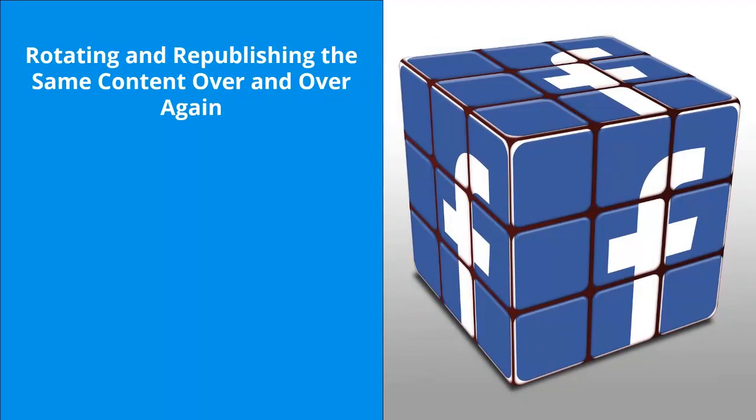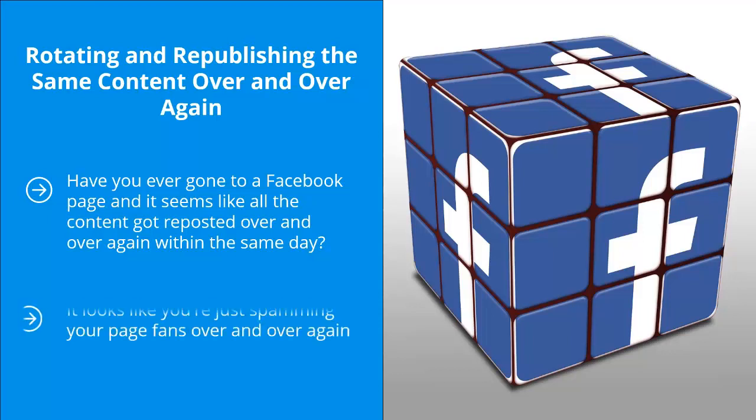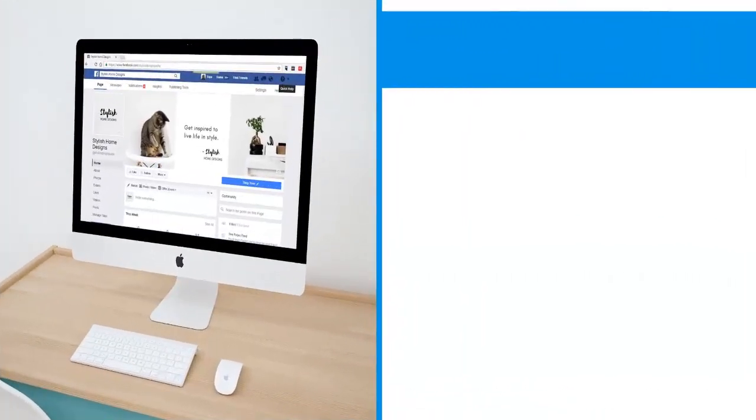Mistake six: rotating and republishing the same content over and over again. Have you ever gone to a Facebook page where it seems like all the content got reposted over and over again within the same day? The idea behind this is that the more Facebook audience members see the content, the more likely they will click through. But it looks like you're just spamming your page fans. Don't be surprised if they unlike your page.